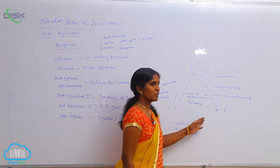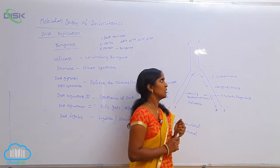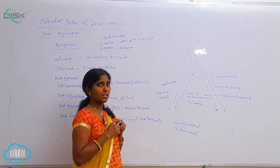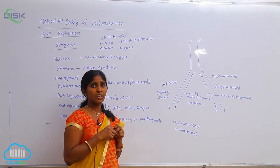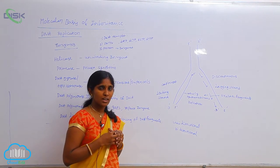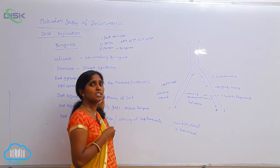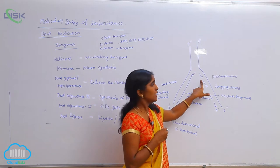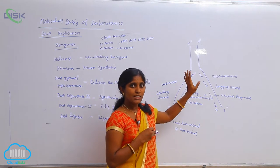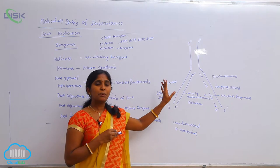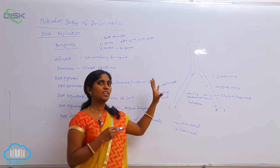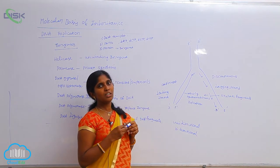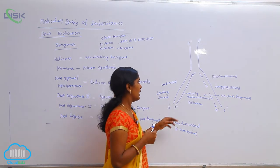Now, coming to the actual procedure of DNA replication. You are seeing here double-stranded DNA. The first step of DNA replication is unwinding of the DNA into 2 single strands. Here the helicase enzyme is worked out — it makes the double-stranded DNA into 2 single strands. After separation, SSB proteins are joined onto the separated single strands to maintain separation and to avoid the rewinding of the DNA.